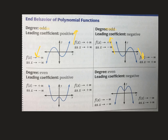Look at the two bottom graphs — they're both even degree. If the degree is even, the ends go the same direction. On this one, they're both going up. On the second one, they're both going down. To recap: if the degree is odd, the biggest exponent is odd, the ends go opposite directions. If the degree is even, the ends of the graph go the same direction.